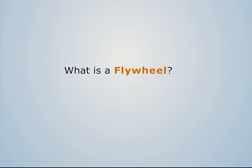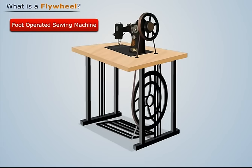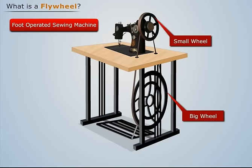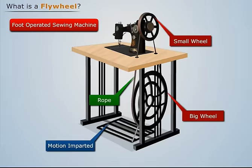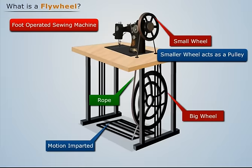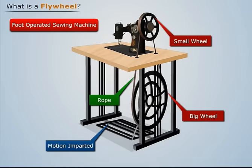What is a flywheel? Consider a foot-operated sewing machine. It consists of two wheels, one big and the other small. The wheels are connected by a rope. When motion is imparted to the bigger wheel, the rope transfers this motion to the smaller wheel. This smaller wheel acts as a pulley and runs the sewing machine.